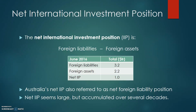One important distinction: the net international investment position is different from the balance of the capital and financial account. We know from the balance of payments that financial flows are recorded in the capital and financial account, but the capital and financial account refers to flows or changes in investment on a year-by-year basis. The net international investment position, by contrast, refers to the overall difference in foreign liabilities and assets at one point in time, rather than being a year-by-year change.